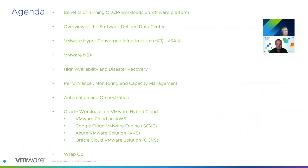This is the agenda for today's discussion — it's a jam-packed agenda. We'll start with the benefits of running Oracle Workloads on a VMware platform, then cover the Software Defined Data Center overview, VMware HCI and vSAN, VMware NSX, high availability, disaster recovery, performance monitoring, capacity management, automation orchestration, and running workloads on VMware Hybrid Cloud. We'll focus on VMware Cloud on AWS, and wrap up with collaterals and links.